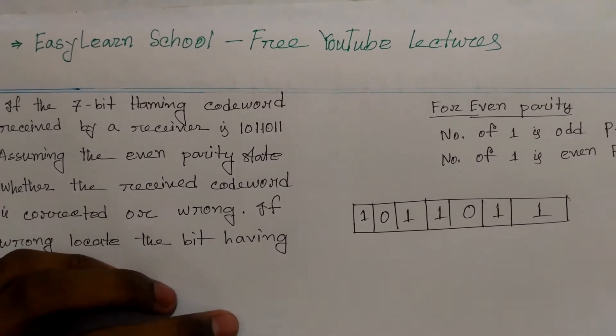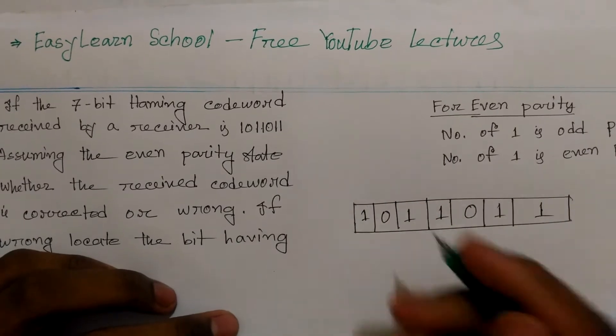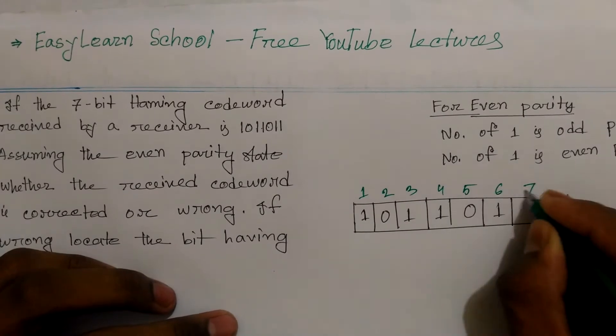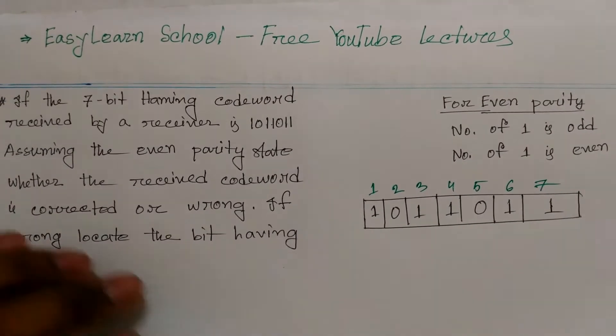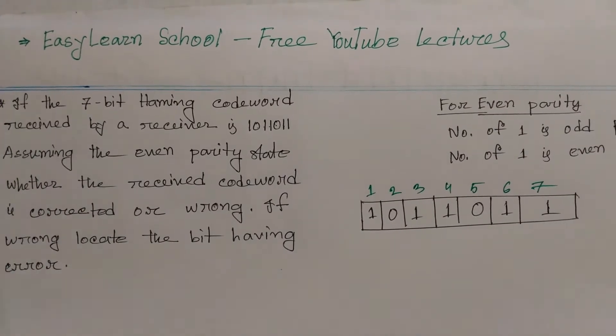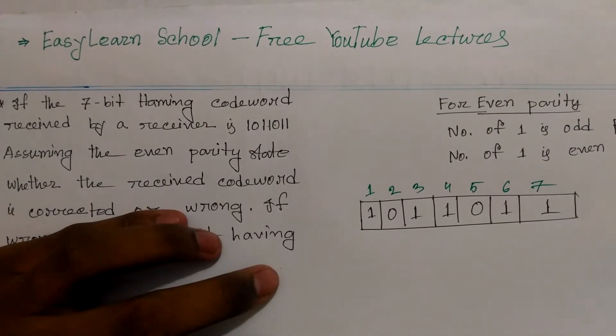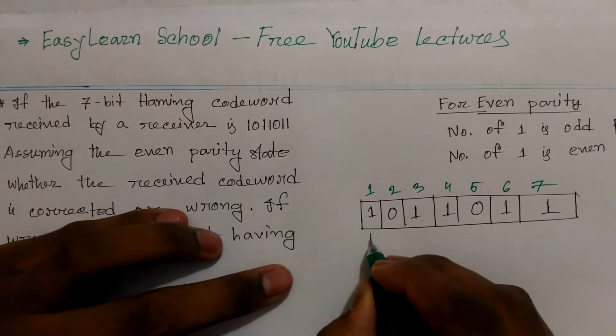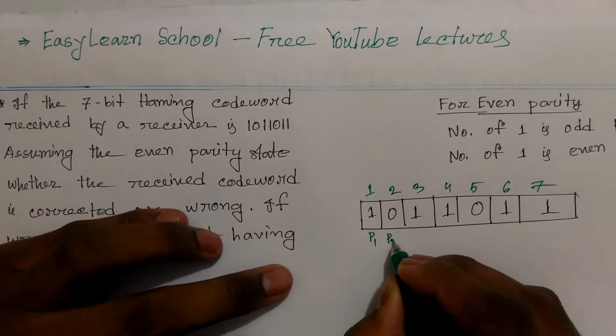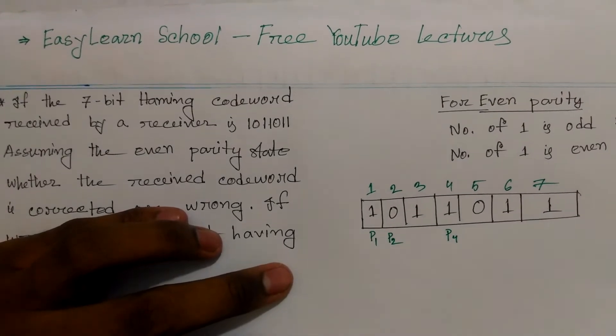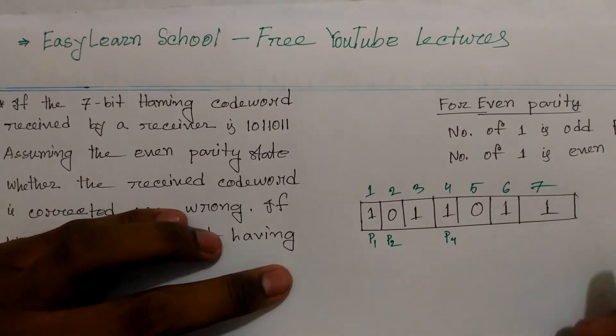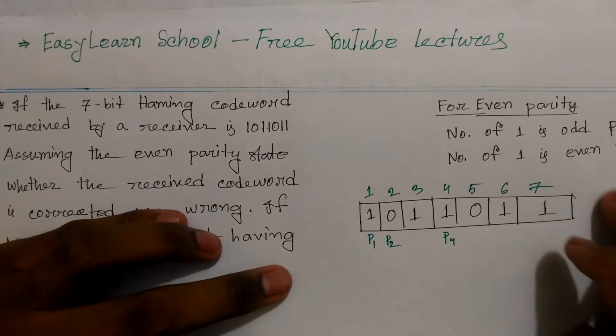The bit positions are numbered 1 through 7. Positions 1, 2, and 4 are parity bits (P1, P2, P4) at powers of 2. Positions 3, 5, 6, and 7 are data bits. Parity bits are placed at positions that are powers of 2: 2^0, 2^1, 2^2.